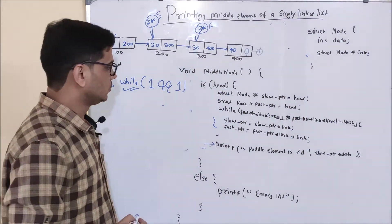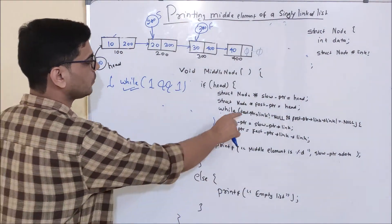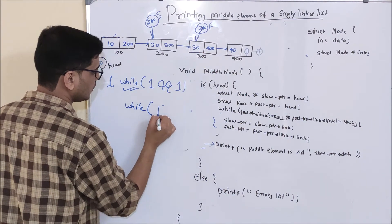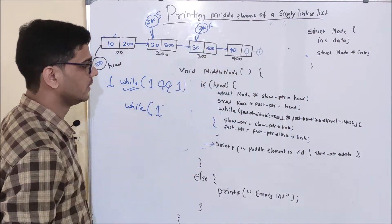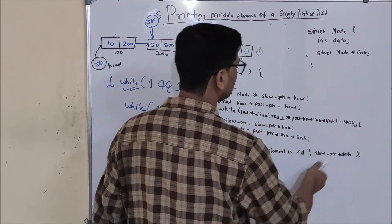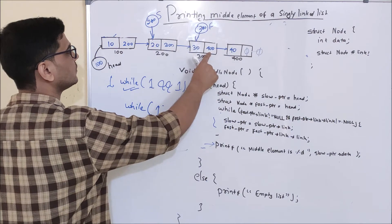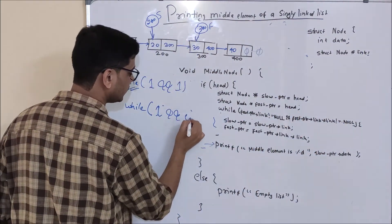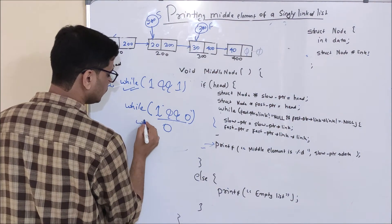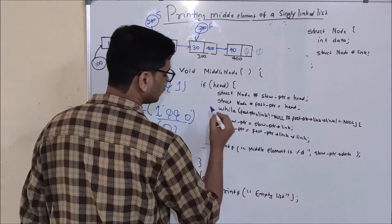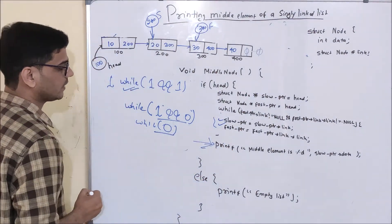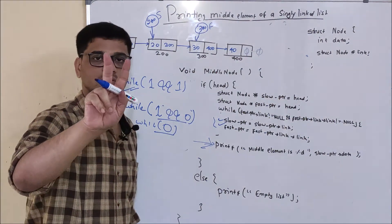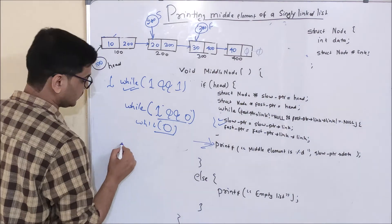The while check runs again. Fast pointer is 300 and its link part is 400, so the first condition is true. But fast pointer dot link dot link: fast pointer dot link is 400 and its link part is null — so this condition is false. One AND zero is zero, so the while check is false. We don't execute the movement lines, and we print slow pointer dot data. Slow pointer is pointing to the second node, so 20 will be printed.